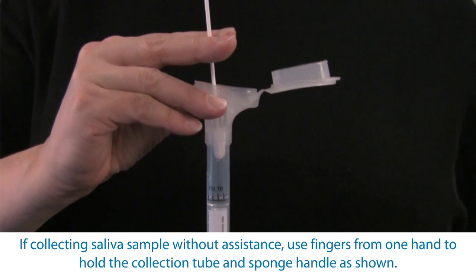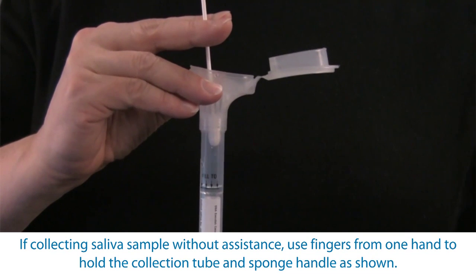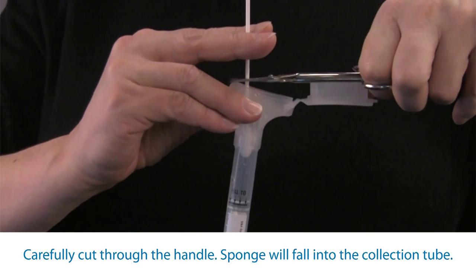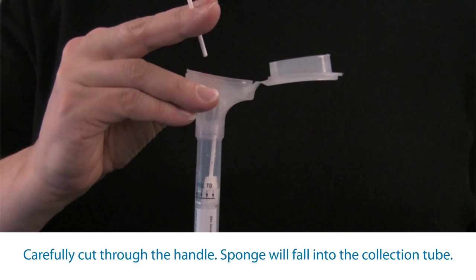If collecting saliva sample without assistance, use fingers from one hand to hold the collection tube and sponge handle as shown. Using the opposite hand, carefully cut through the handle directly above the sponge. The sponge will fall to the bottom of the collection tube.